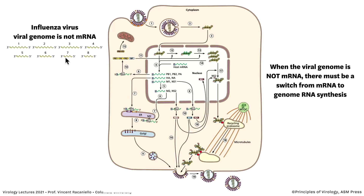Influenza virus is a negative-strand RNA virus, but its genome is in pieces — it's segmented. When the genome is not mRNA, there has to be a switch. The virus comes in by endocytosis; low pH triggers fusion of the viral and endosome membranes. The RNPs go into the cytosol and then into the nucleus. There they are copied to make mRNAs, which go out to the cytoplasm to be translated and eventually give rise to new particles. Those viral RNAs also have to be copied to make more negative strands — through a plus-strand intermediate — and then negative strands eventually go out of the nucleus to be put into new virus particles.